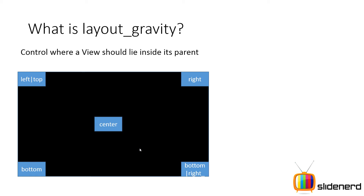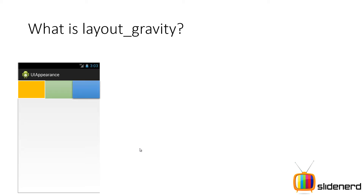Remember, if the view and the parent are both of the same size, you're not going to see any effect of layout gravity. So first, let's talk about layout gravity with respect to a horizontal linear layout. Horizontal linear layouts are those where your views are placed side by side in different columns inside the same row.